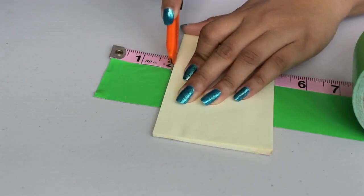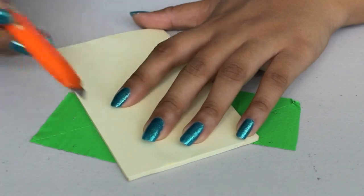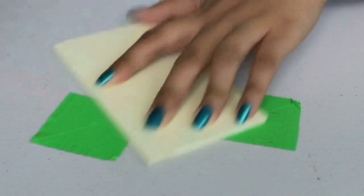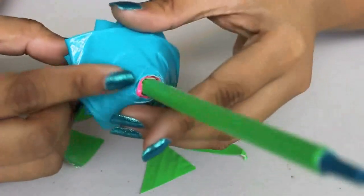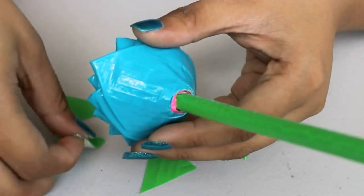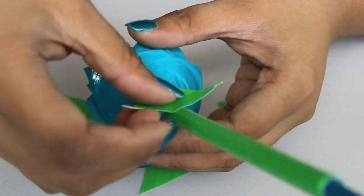Cut out two more square pieces and cut them diagonally so you have four smaller triangle shapes.